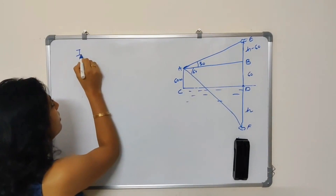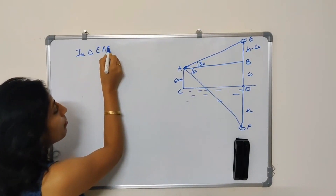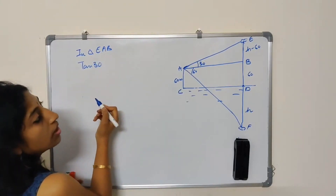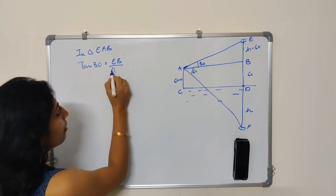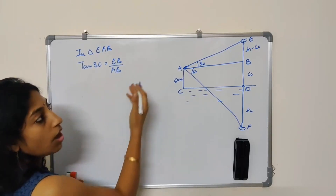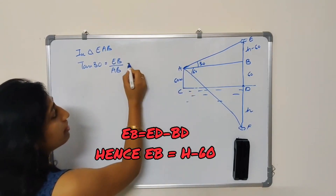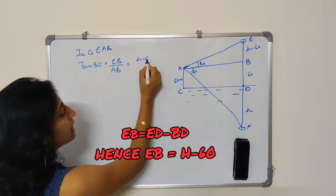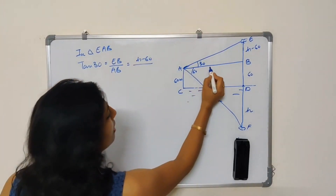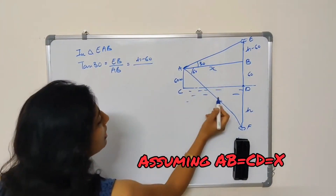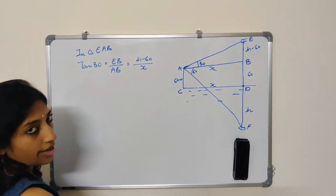Simply I have to form the equations and try to get the value of H from there. In triangle EAB, what is tangent 30? Tangent 30 is EB divided by AB — opposite upon adjacent, perpendicular upon base — which is H minus 60. Let me consider AB as X. Then CD is also X. So tangent 30 equals H minus 60 upon X.